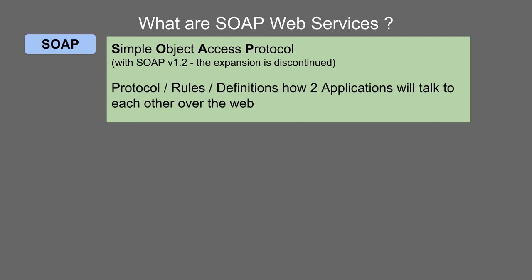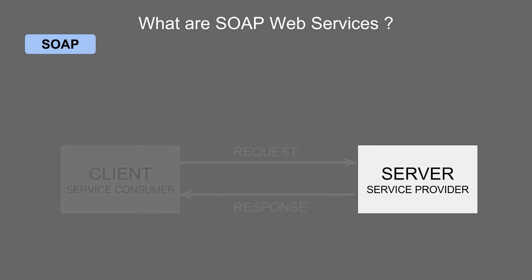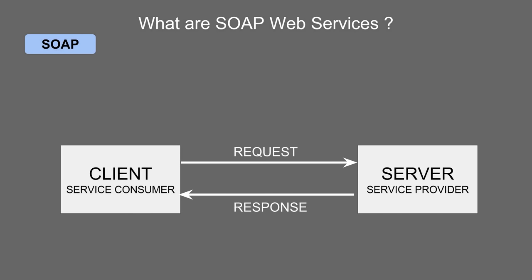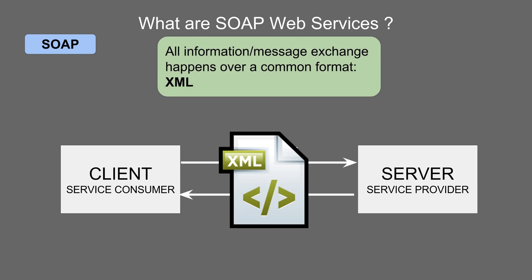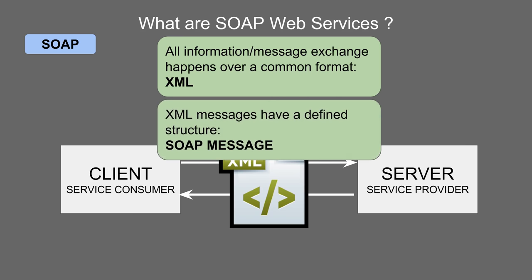SOAP basically is a set of rules and definitions on how two applications will talk to each other over the internet. We know the client-server concepts, and we know that there has to be a service provider and a service consumer that talk to each other with the help of web services. SOAP protocol says that all the exchange of data, message, or information between these two applications has to be in a common format, and in case of SOAP, that format has to be XML. It also says that it cannot be a very simple XML document — the XML message has to be a SOAP message.